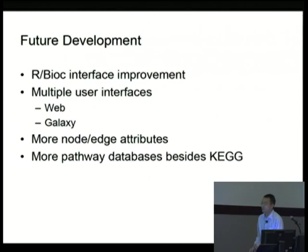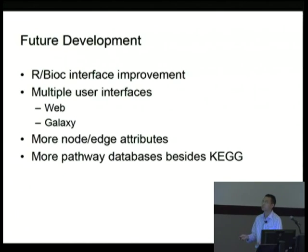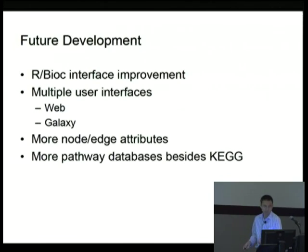We are always working hard to further improve PATH-View. For instance, we keep developing the R BioConductor interface to make it more useful and user-friendly. We are also adding multiple other user interfaces, like the web interface and the Galaxy interface. We are adding more control over nodes and edge attributes, particularly under graph-view mode, and we may also provide support to databases other than KEGG.